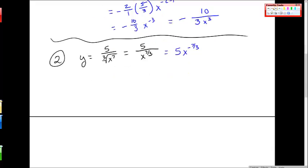Then to take the derivative, y prime, I bring the negative 7 thirds out front, so negative 7 thirds times 5 times x to the negative 7 thirds minus 1.